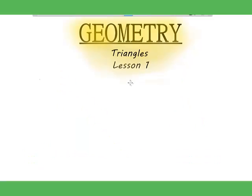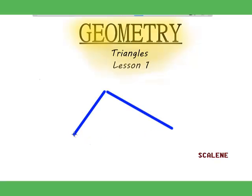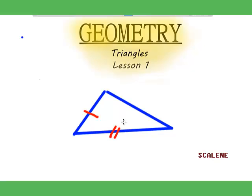So the next triangle is the scalene triangle. A scalene triangle has no equal sides and no equal angles. So it's kind of an odd triangle.